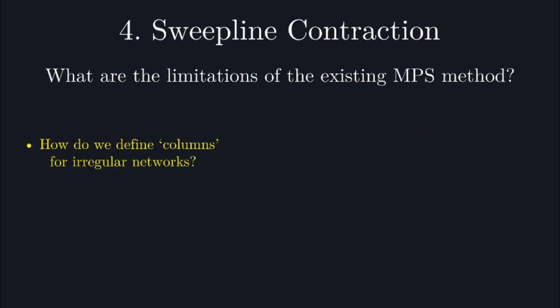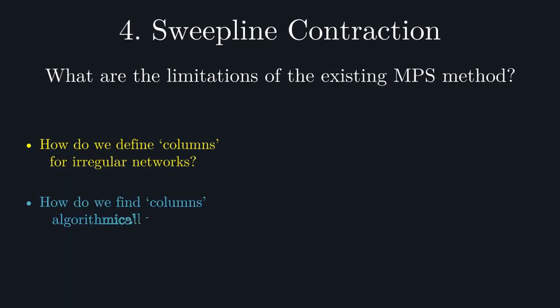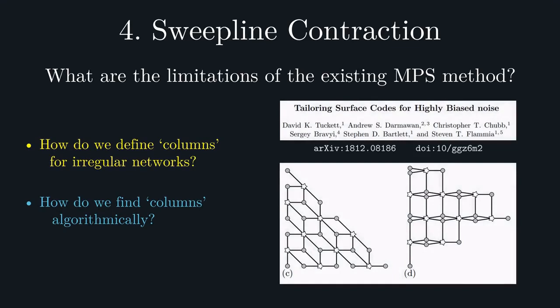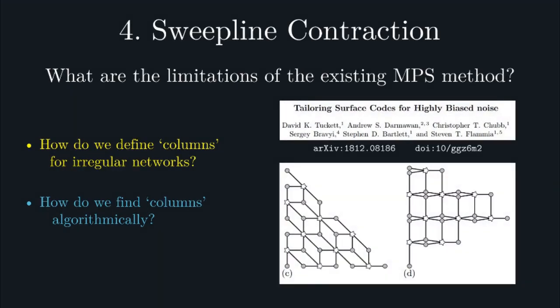A second, and more subtle question, is that even if these columns are well-defined, how do we find them algorithmically? One approach is to simply coarse-grain our lattice into the square lattice. Here's an example of this from a figure in Tuckett et al. for the case of the rhombic lattice. This approach, however, is rather clunky, and it's far from obvious how one could automate this.